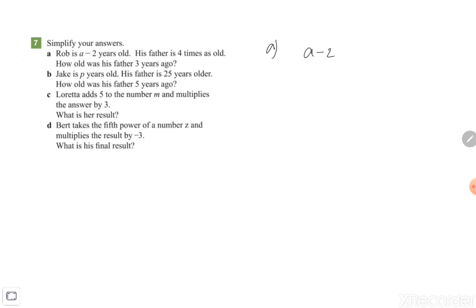So you need to multiply your age from Rob by 4. How old was his father 3 years ago? That means you need to subtract 3. Now you need to simplify your answer.